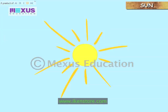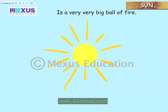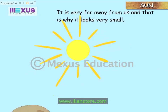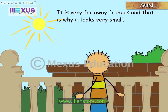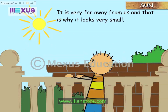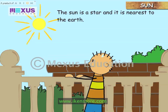The Sun is a very, very big ball of fire. It is very far away from us, and that is why it looks very small. It is very hot and gives us heat and light. The Sun is a star and it is nearest to the Earth.